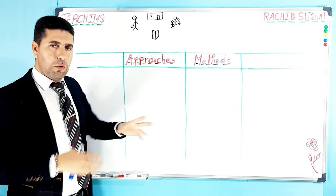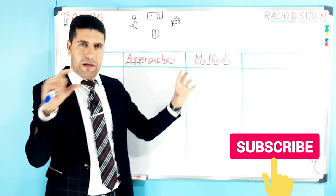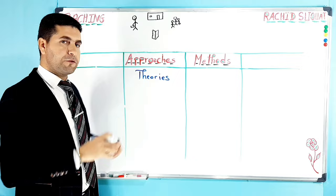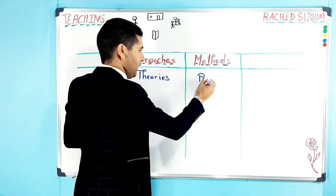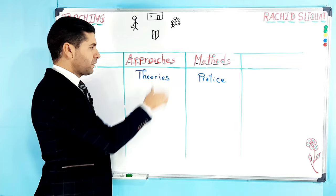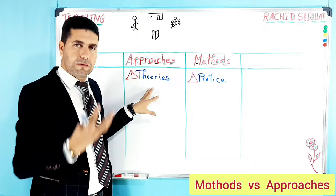When you read literature, articles, or books related to approaches and methods, you always find a very highlighted idea: approaches have to do with theories, and methods have to do with practice. This is something you find a lot when you read documents or literature about the differences between approaches and methods. This is a very essential difference — theories versus practice.